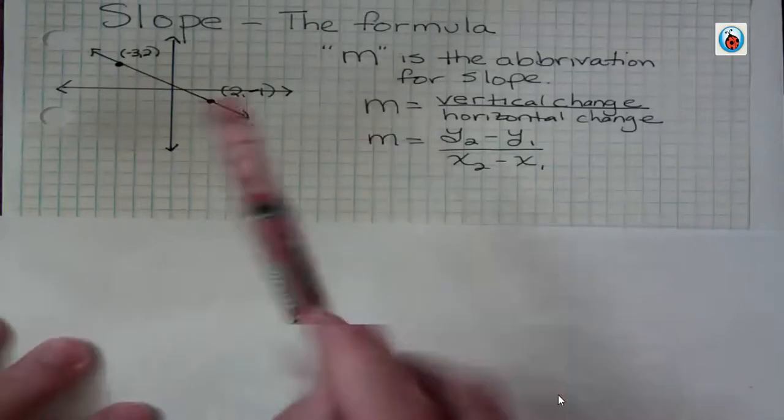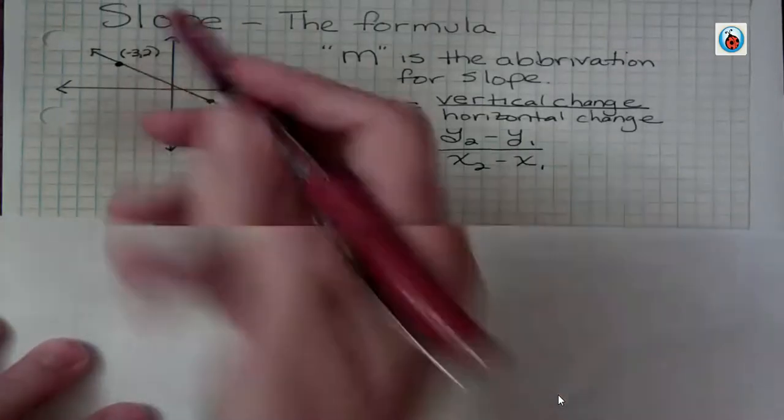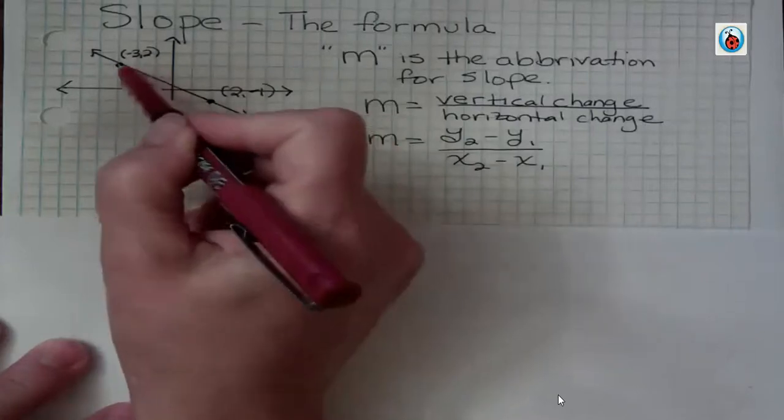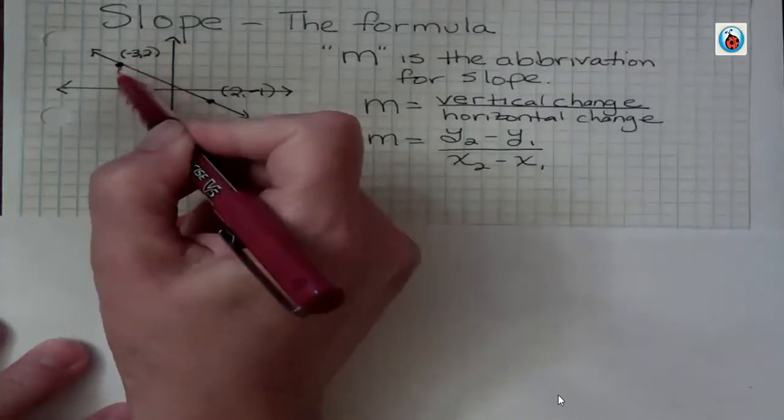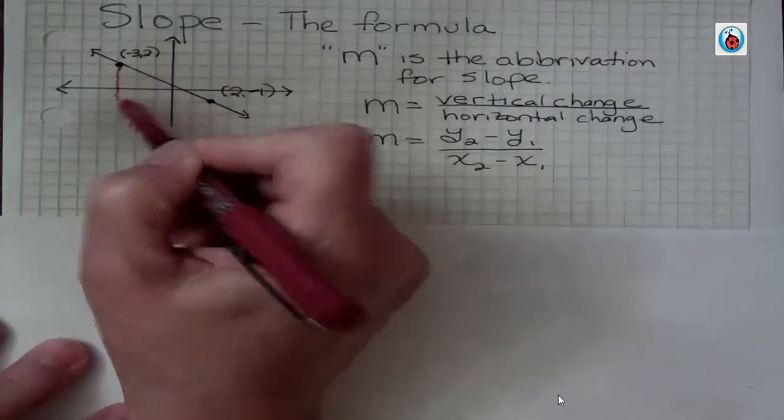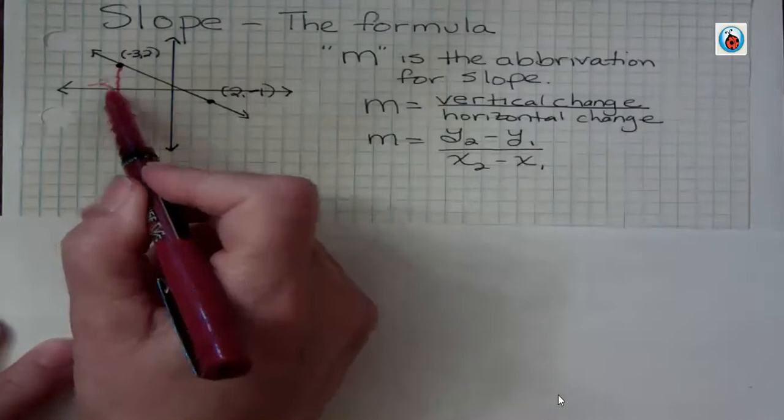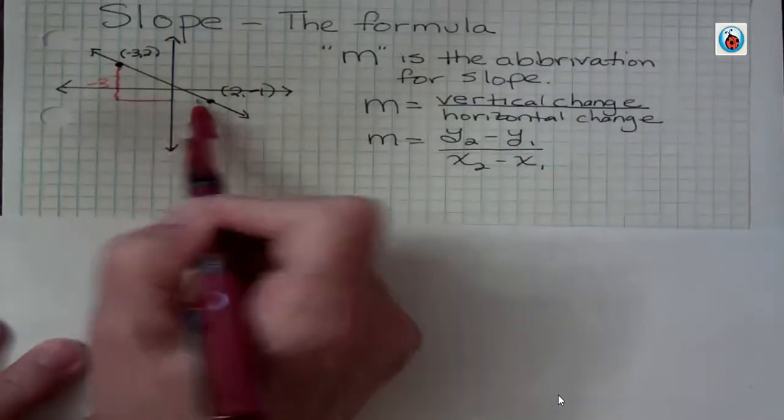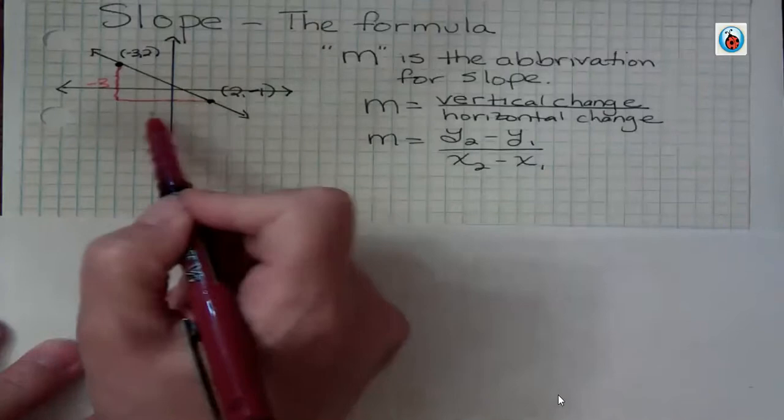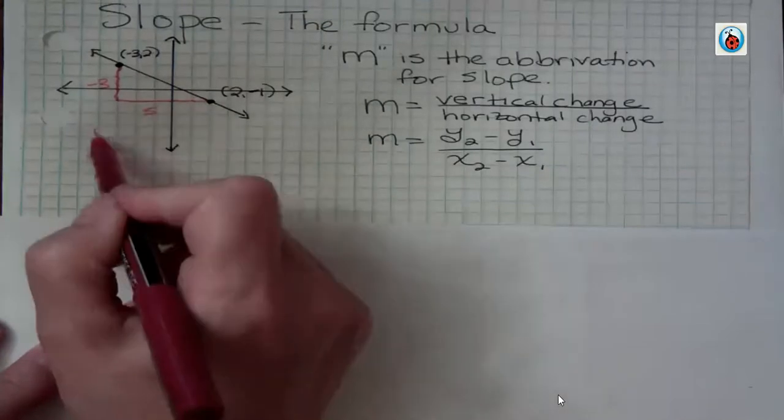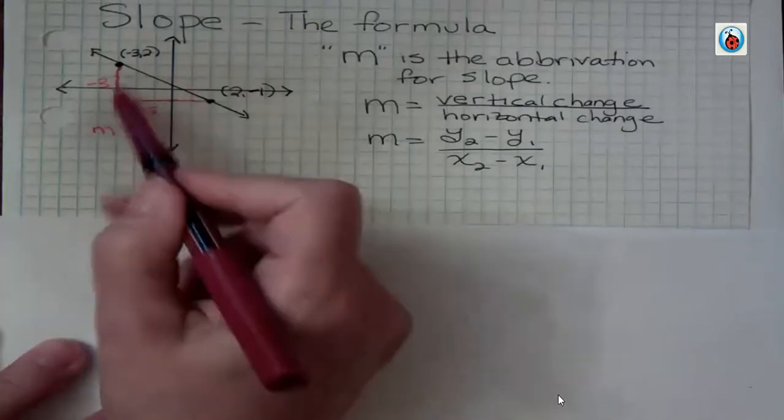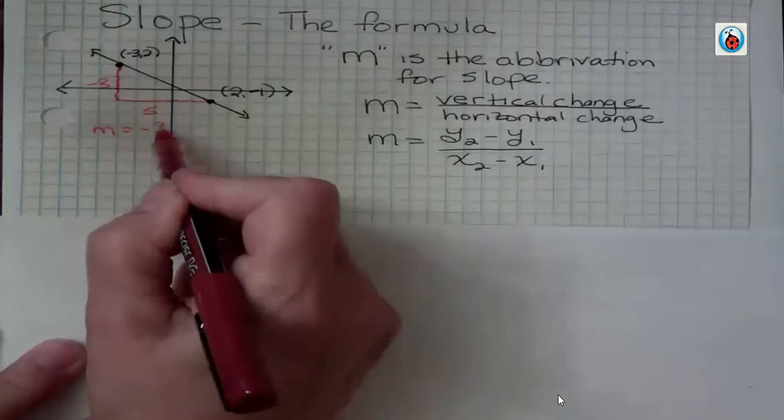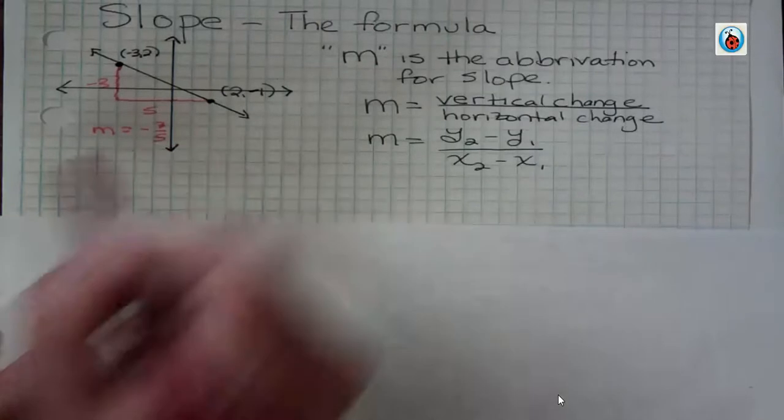So if we look at this particular two points, if you want to look at the rise, we're going to go one, two, three down, that's negative three, and with the run one, two, three, four, five, five over. So I can see from the picture that my slope would be negative three fifths, down three and over five.